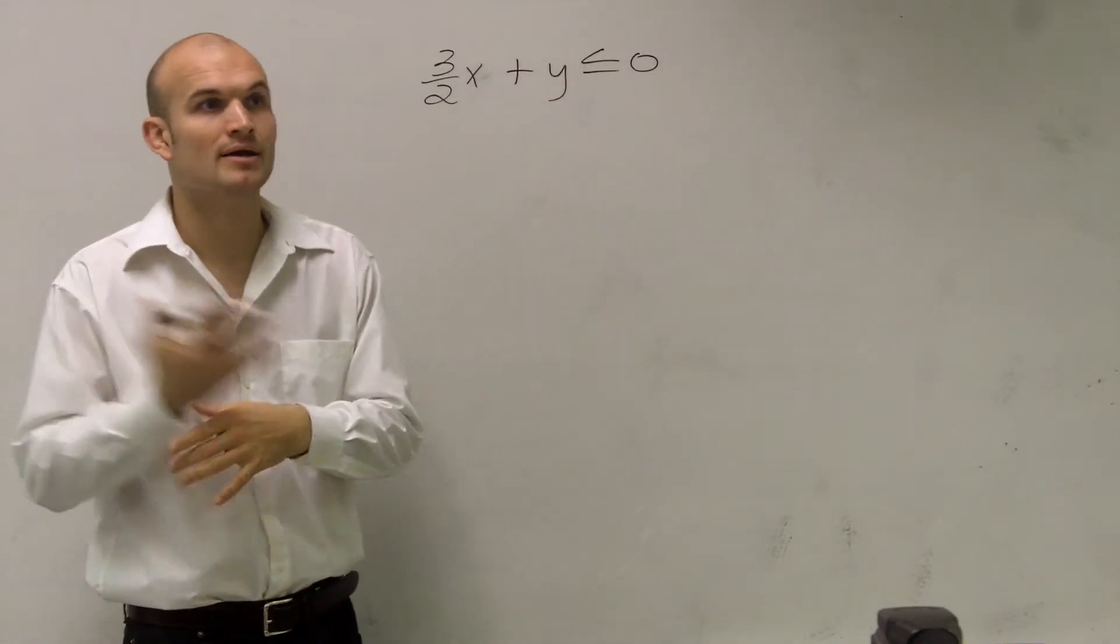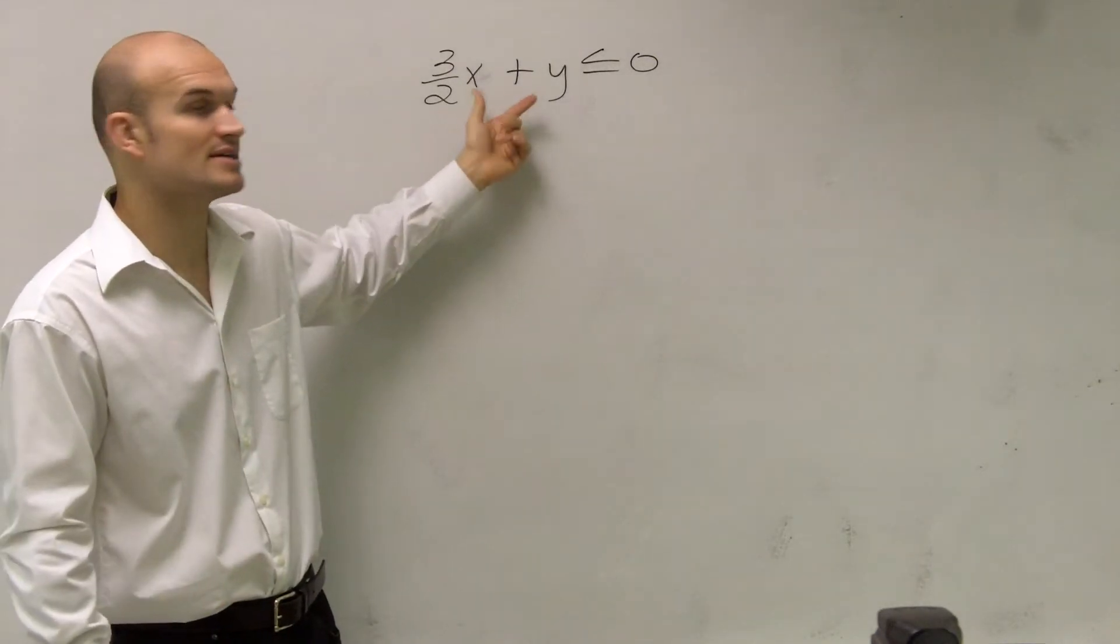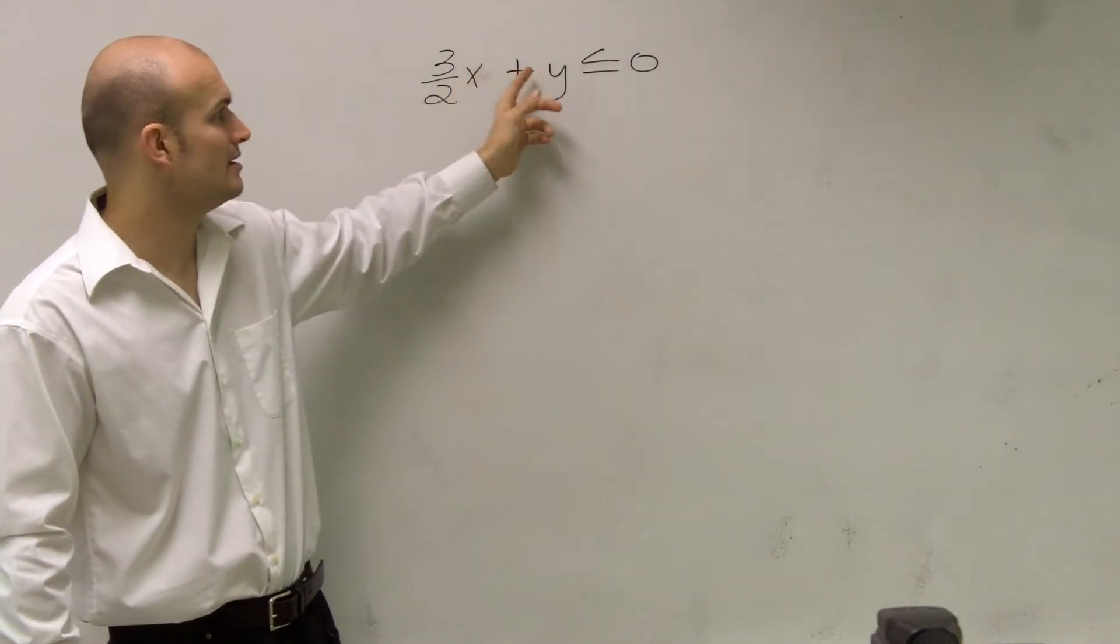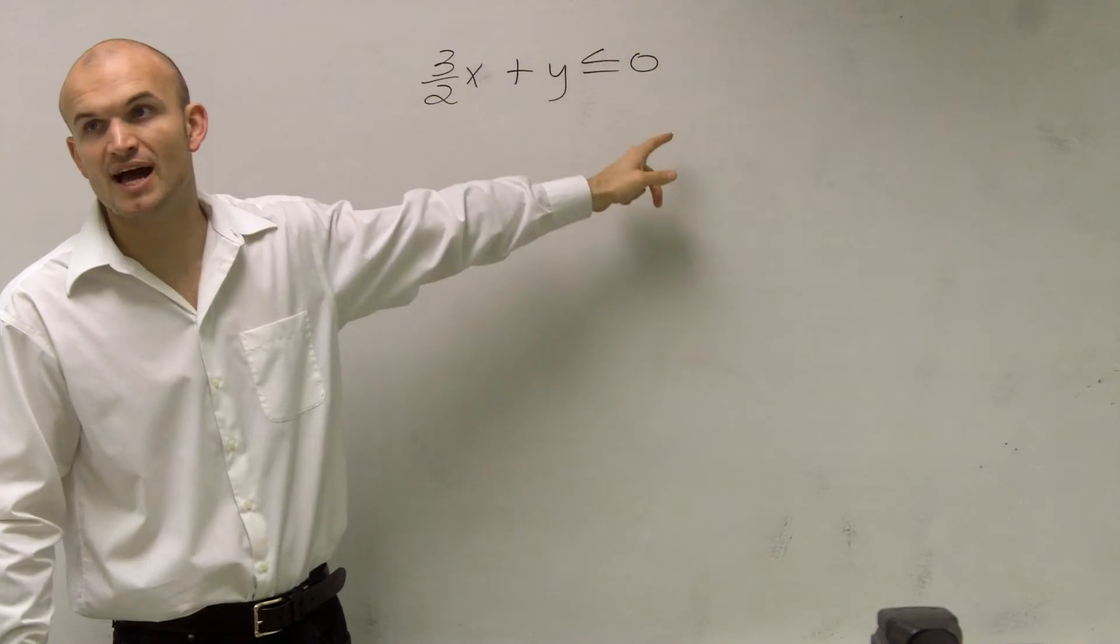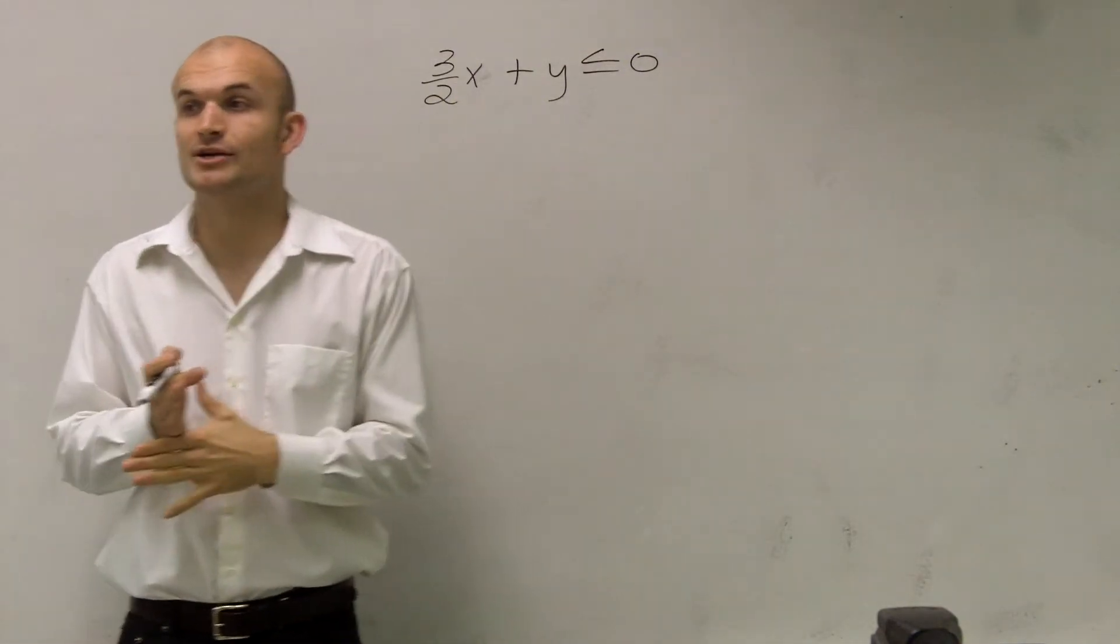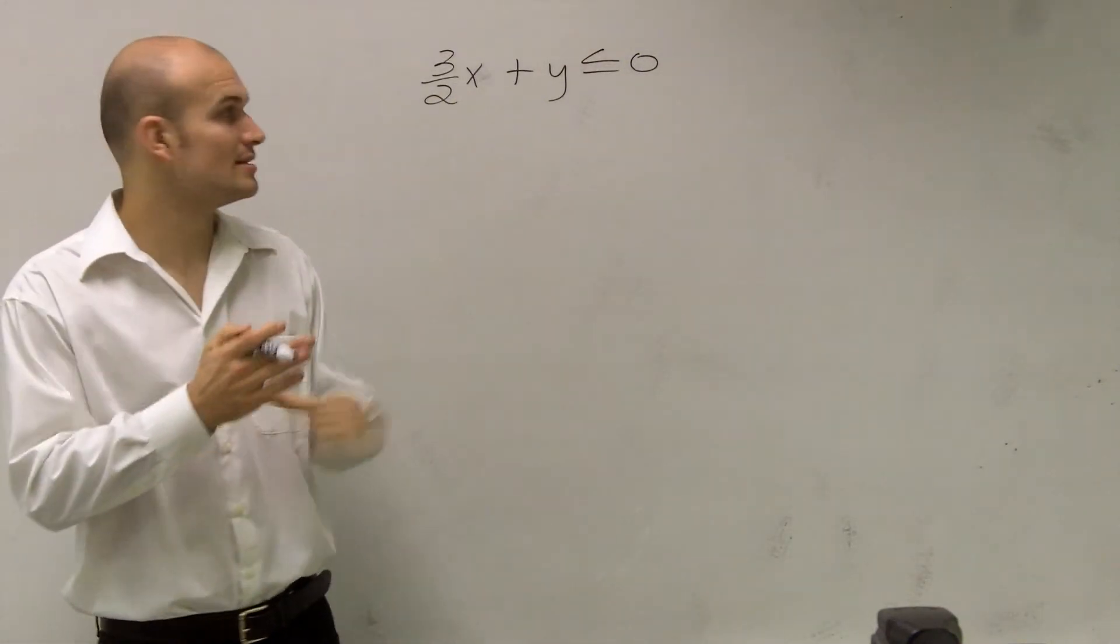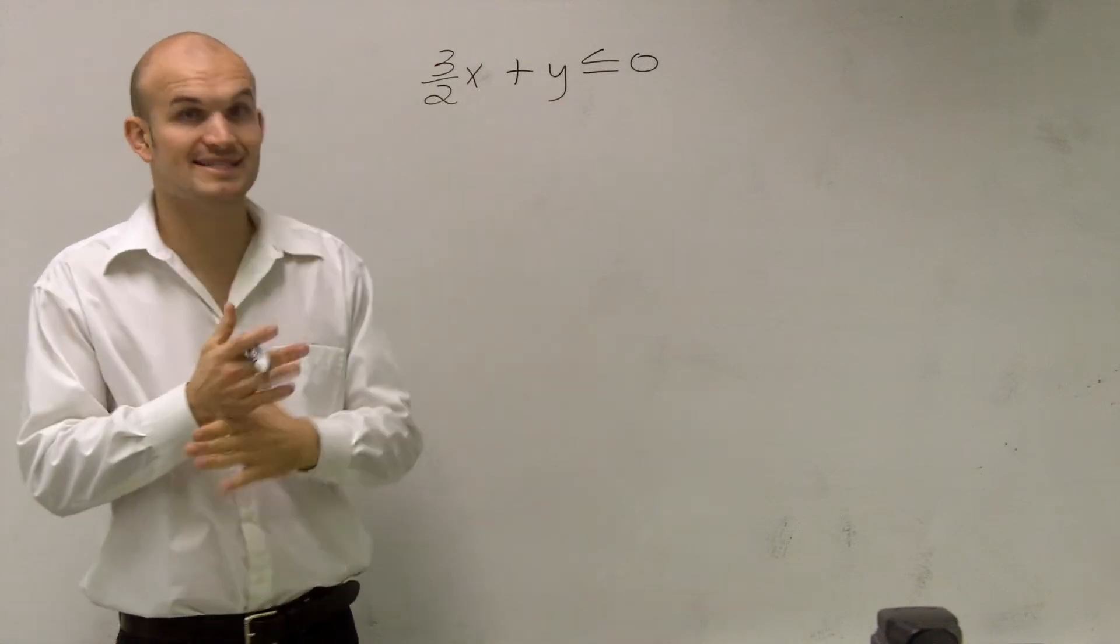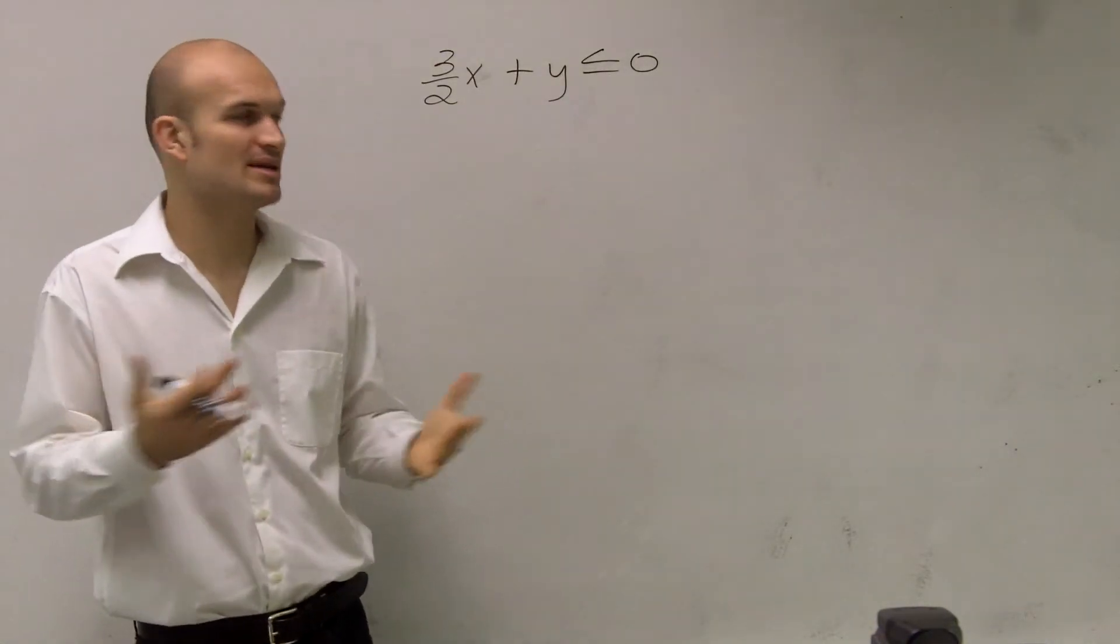But when you notice that, when you plug a 0 in for x and y, you always get 0 for the other value. So therefore, the x and y intercept for both of your values are at 0. So that's going to be an issue for us.